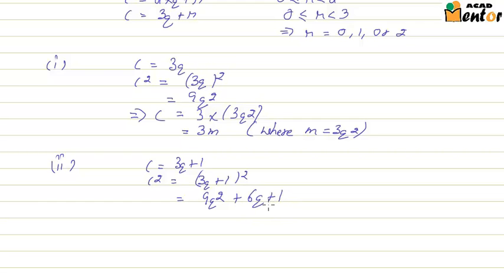On observing, we can see that we cannot express this in terms of 3m. 9q square plus 6q are multiples of 3, but 1 is not. So we will club the first two terms and take 3 as common. So it will become 3 multiplied by 3q square plus 2q, plus an independent term 1.